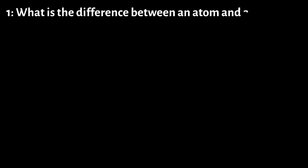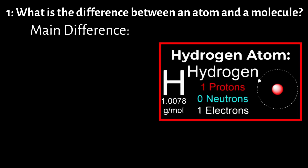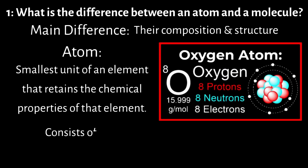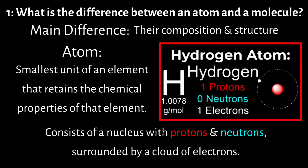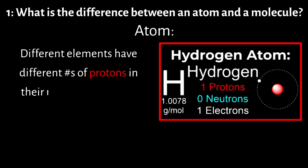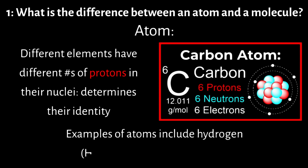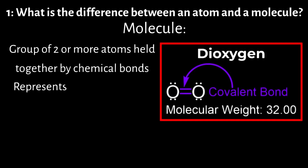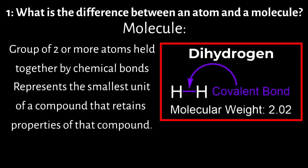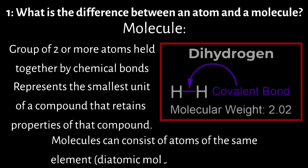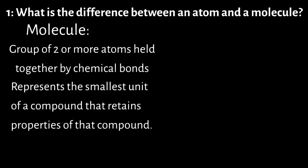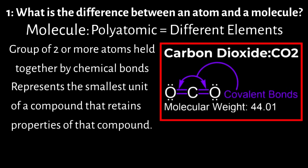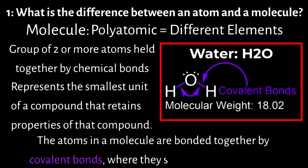Number 1: What is the difference between an atom and a molecule? The main difference lies in their composition and structure. An atom is the smallest unit of an element that retains the chemical properties of that element. It consists of a nucleus containing protons and neutrons surrounded by a cloud of electrons. Atoms of different elements have different numbers of protons, which determines their identity. Examples include hydrogen (H), oxygen (O), and carbon (C). A molecule is a group of two or more atoms held together by chemical bonds, representing the smallest unit of a compound that retains the properties of that compound. Molecules can consist of atoms of the same element — diatomic molecules like H2 and O2 — or different elements, such as water (H2O), carbon dioxide (CO2), and methanol (CH3OH). The atoms in a molecule are bonded together by covalent bonds, where they share pairs of electrons.